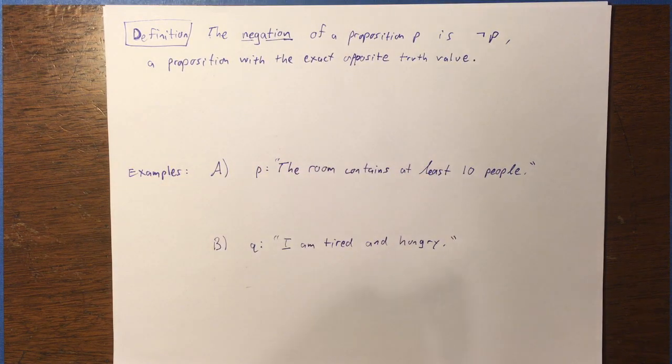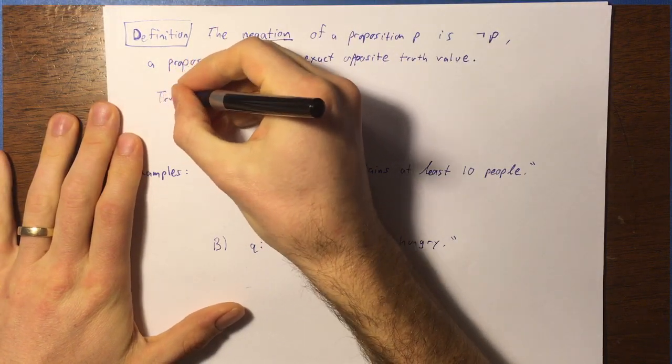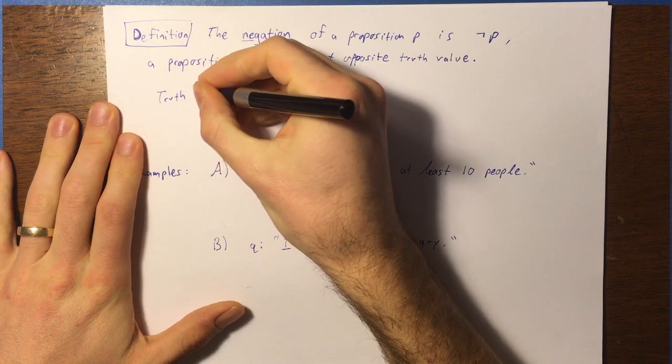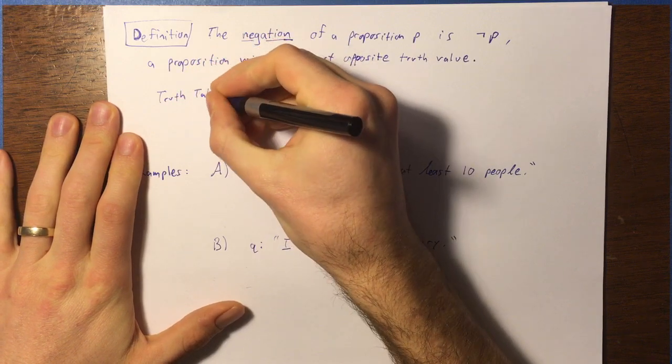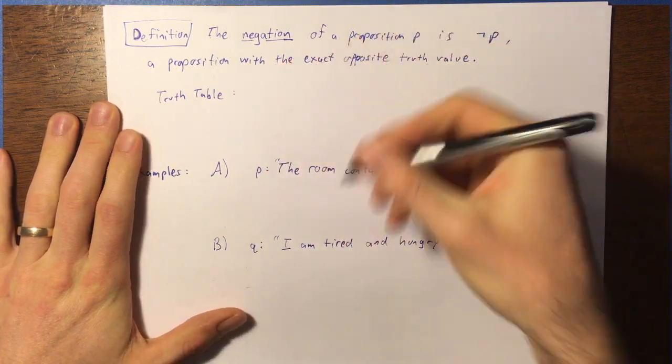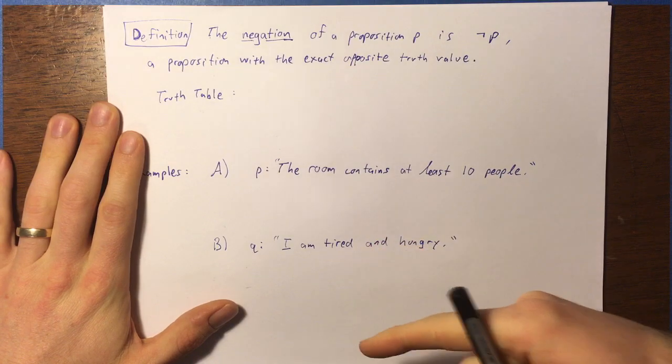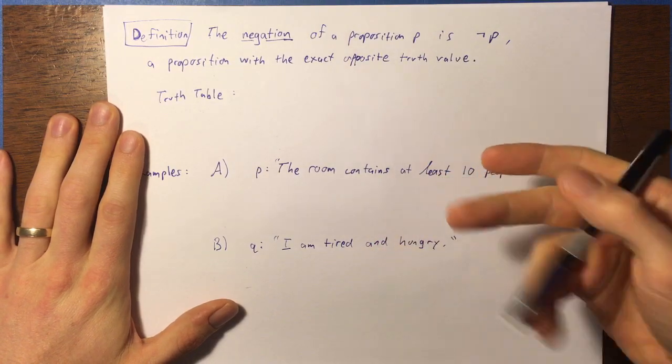So to describe what it is that this operation does, we can build what's called a truth table. A truth table is essentially a table of values for an operation. So we're going to have an input. In this case, being that it's a unary operation, it's going to have one input. That's the proposition P, or the truth value of P.